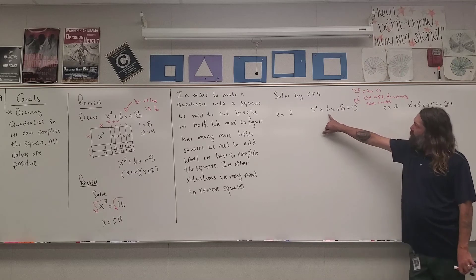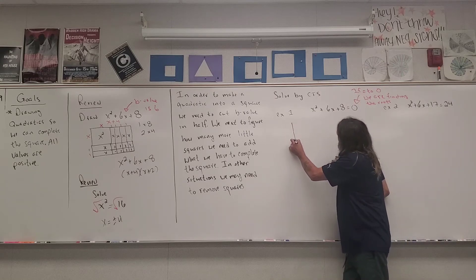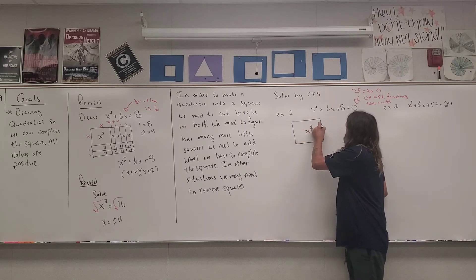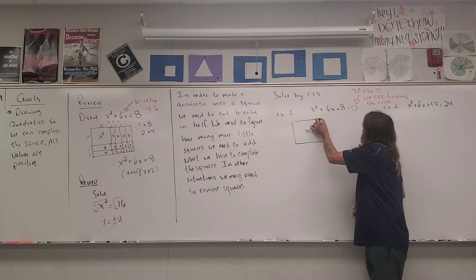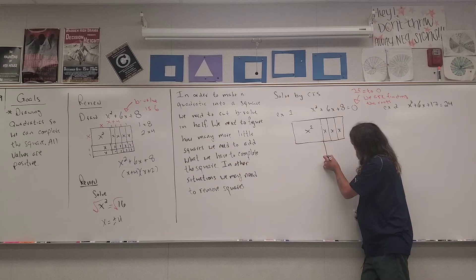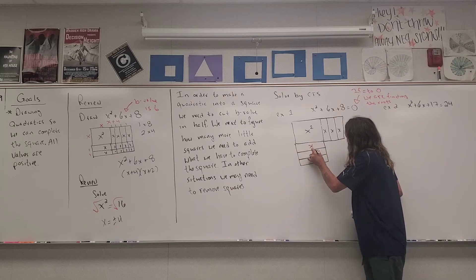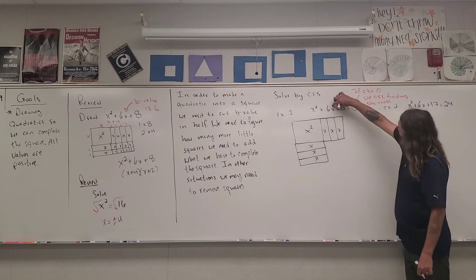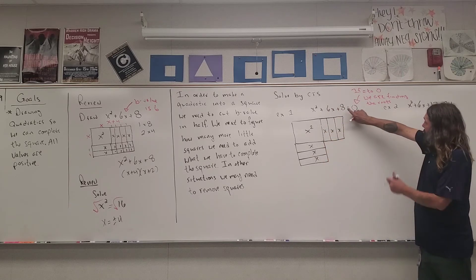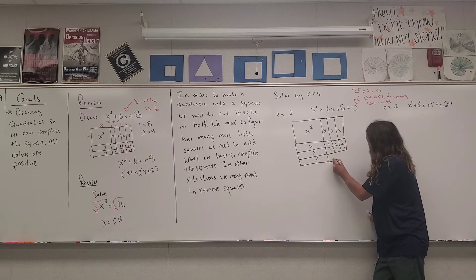I'm going to draw this quadratic but with half of the b value. I have my x squared, and instead of starting with the c value I'm starting with my b value. I need to have three x's on this side of it and three more x's on the other side. I cut my b value in half, so it's three x's here and three x's there. Then I have eight little squares to add: three here, three more gets me to six, and two more gives me eight.